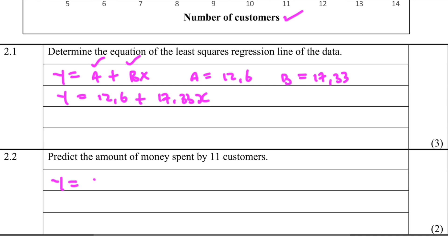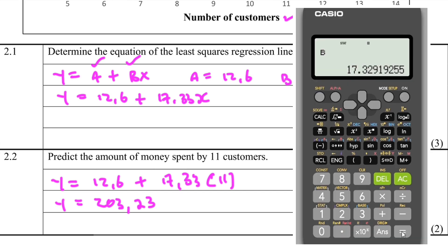Y equals 12.6 plus 17.33. In the place of x we substitute 11. So let me go ahead and put that on my calculator: 12.6 plus 17.33 multiply by 11. I'm getting 203.23. So y equals 203.23. So that is the amount of money spent by 11 customers.